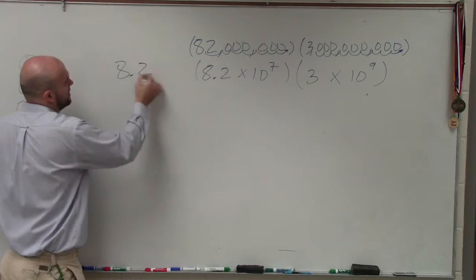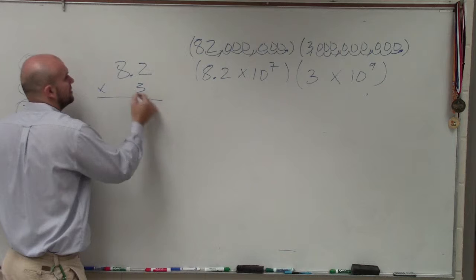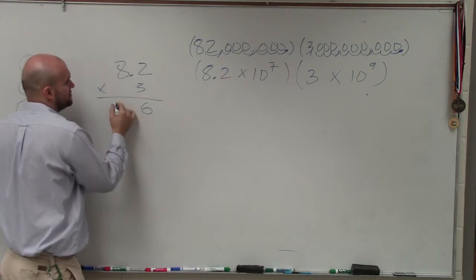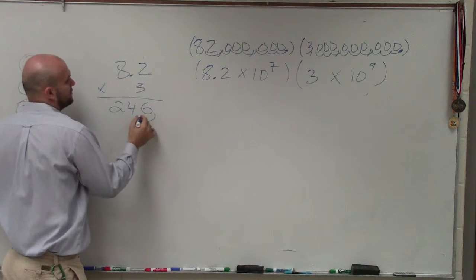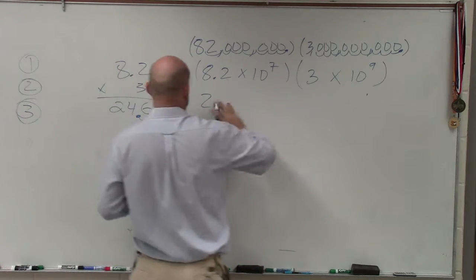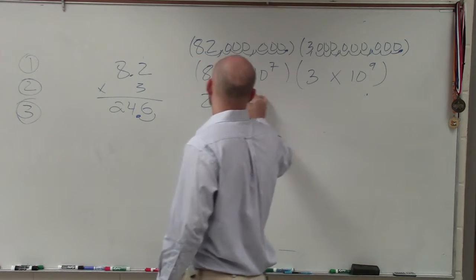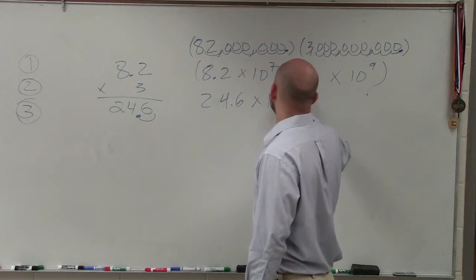We can simply do that: 8.2 times 3. 3 times 2 is 6, 3 times 8 is 24, moving over one is 2.4. So I have 24.6 times 10 to the 16th power.